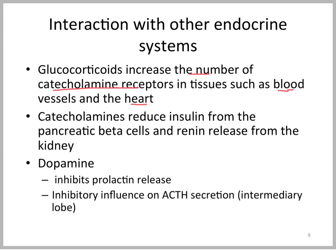So glucocorticoids need to be replaced first for that response to normalize. Catecholamines can reduce insulin secretion from the beta cells and increase renin from the kidney, stimulating the RAA system. Dopamine, particularly through its central effects in the CNS, will inhibit prolactin release and also inhibit ACTH secretion — it has a tonic suppressive effect on ACTH, particularly in the intermediate lobe of species like the horse and the dog.